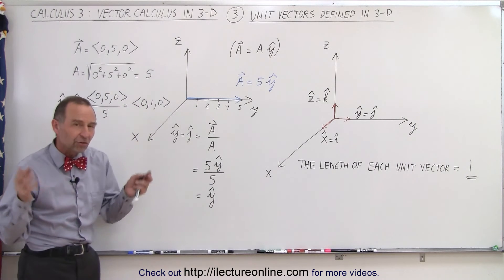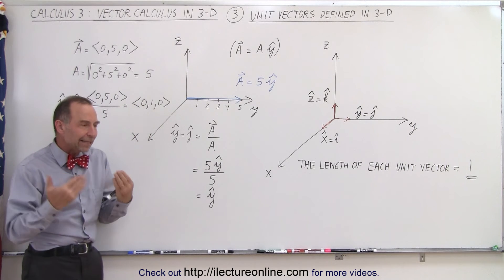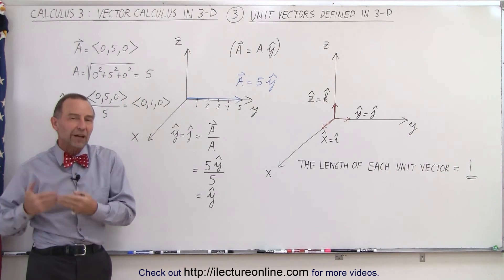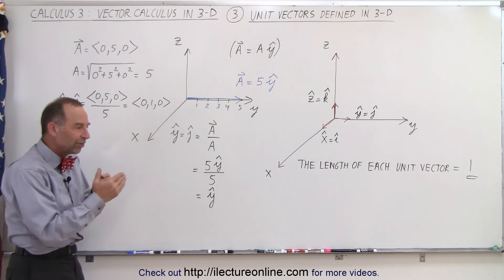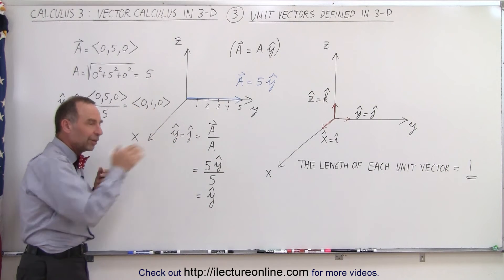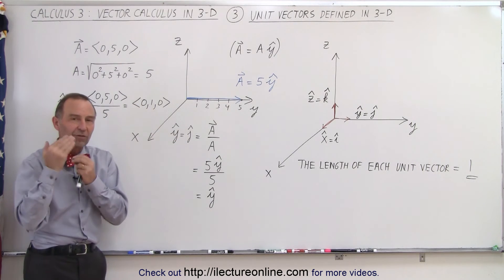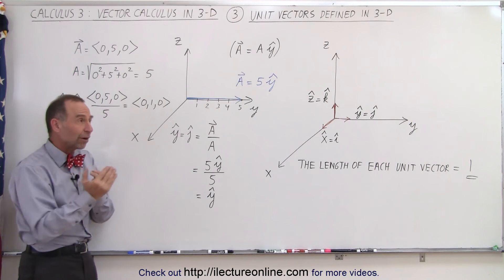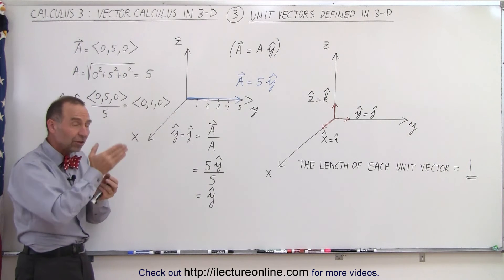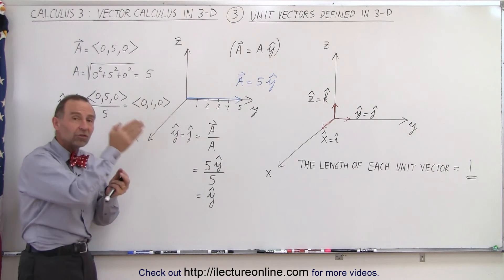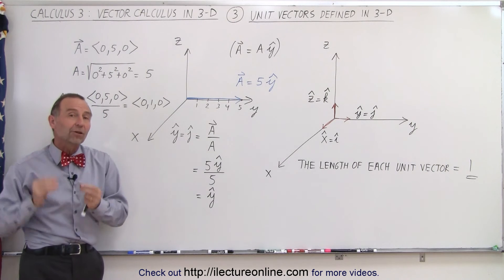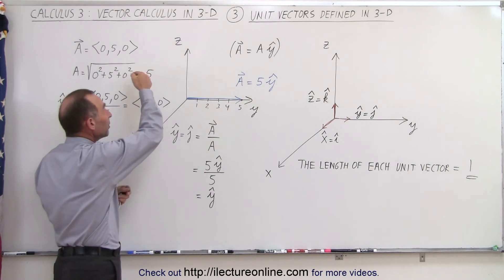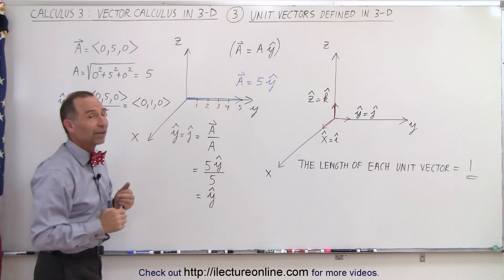Unit vectors are basically indicators of the direction of the vectors. What's the magnitude in the direction of the x-axis? What's the magnitude in the direction of the y-axis? What's the magnitude in the direction of the z-axis? The directions are defined by unit vectors, and the magnitudes are defined by the magnitudes of the vectors.